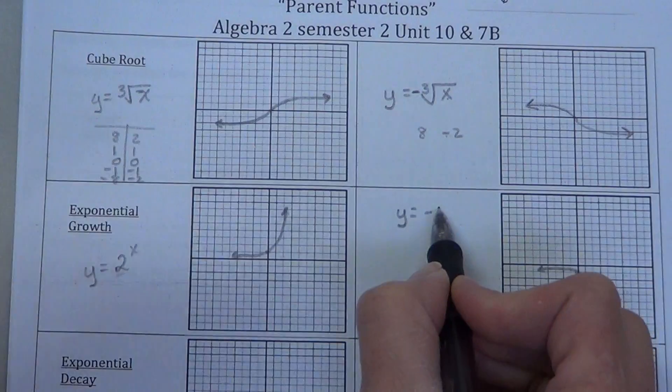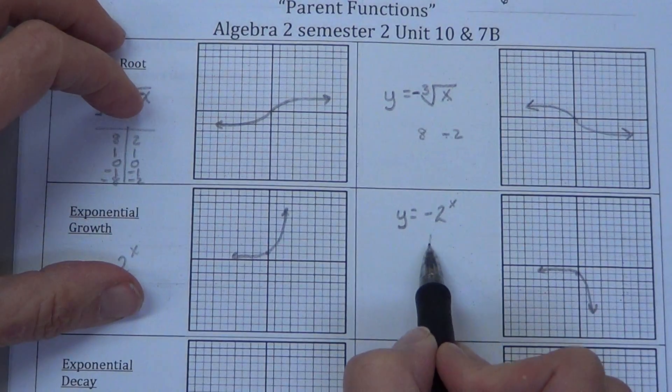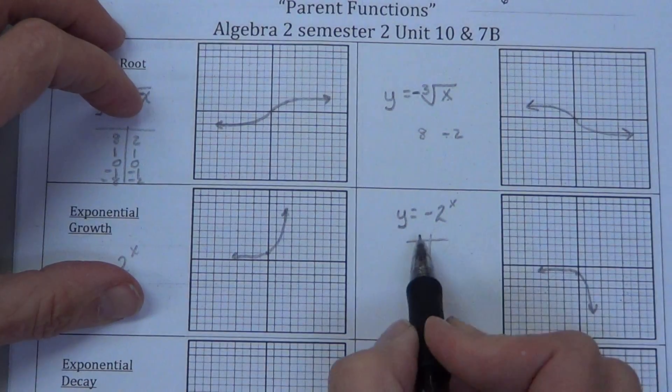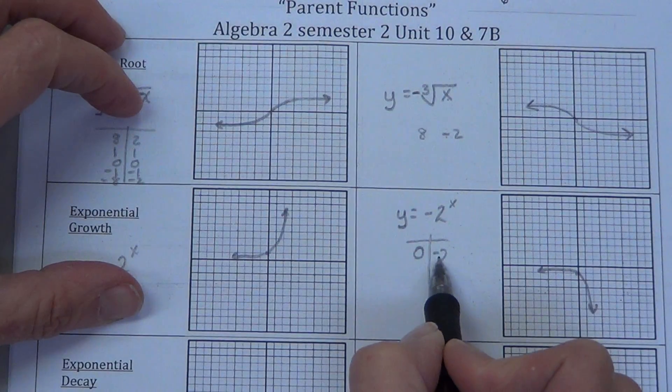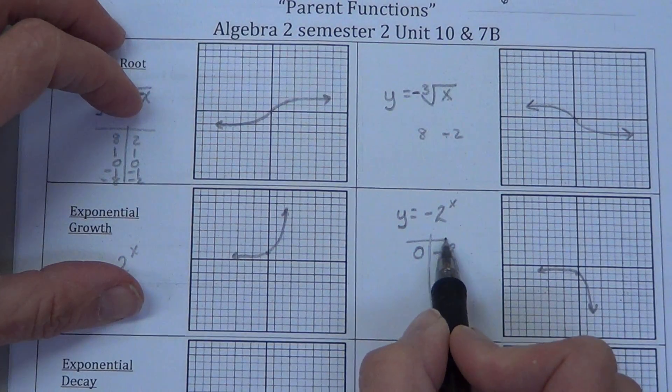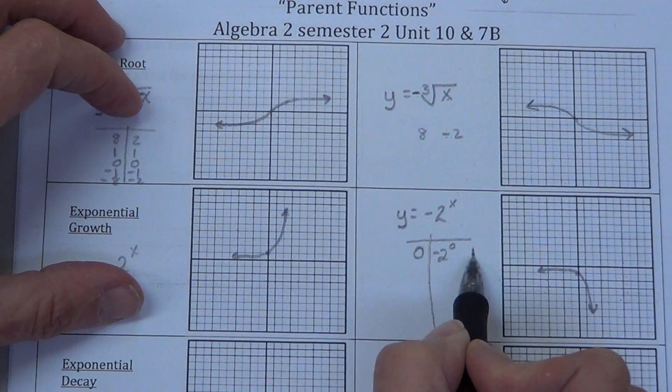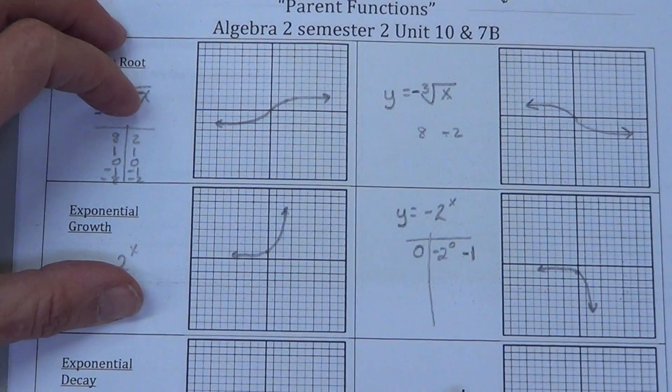If we put negative 2 to the x, does it work? Let's check out 0. Will 0 become negative 1? Well, 0, plugged in there, negative 2 to the zeroth. Any number to the zeroth power is 1. And then we have the negative out in front, so it does become negative 1.